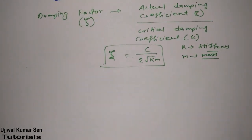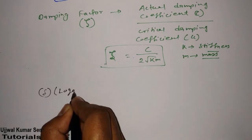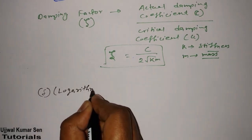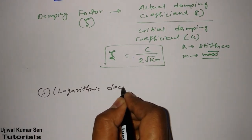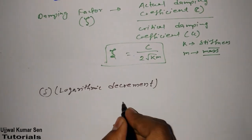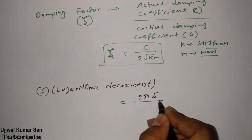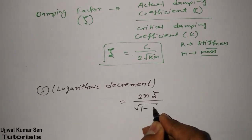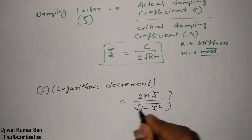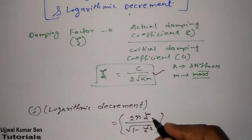Now, come to the logarithmic decrement. Just like in case of logarithmic decrement, it is denoted by delta. This is known as logarithmic decrement. So logarithmic decrement is equal to δ = 2πζ/√(1-ζ²). This zeta is known as damping factor. So these two formulas, I mean, if somebody know this formula,